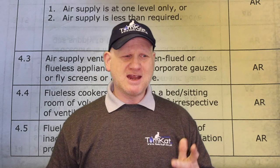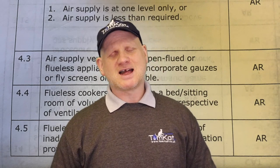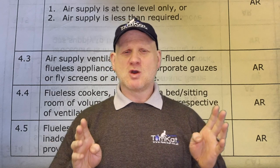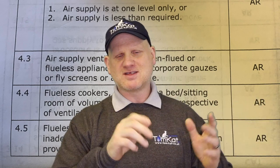So when you go out to a cooker that hasn't got ventilation, do we at-risk it or not? According to IGEM G11 unsafe situations, anything to do with ventilation is classed as at-risk if it's not there. If a kitchen is between 0 and 5 metres cubed with no ventilation requiring 100 cm², it's at-risk. Between 5 and 10 requiring 50 cm² with no ventilation — at-risk. If there's no ventilation at all or the room is undersized, it's at-risk, even if it's a bedsit.